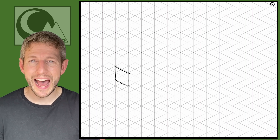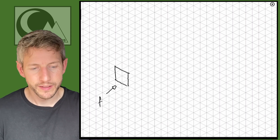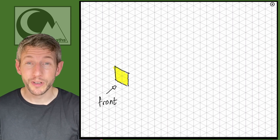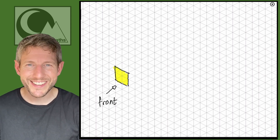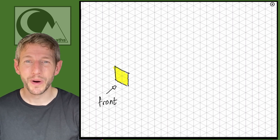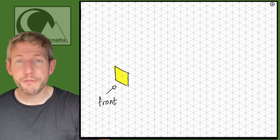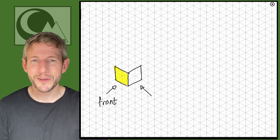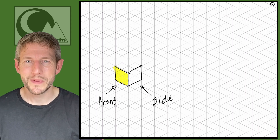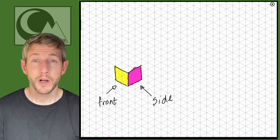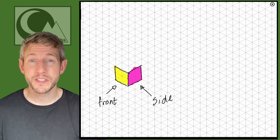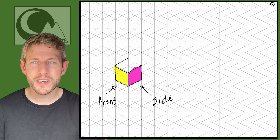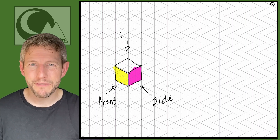Let's first have a look at this shape. It might not look like it, but this shape is actually a square, and this is going to be the front view of the drawing. I'm going to add a side to this shape, and the last thing I have to add to turn it into a cube is the top — in this topic we refer to the top of a shape as the plan view.